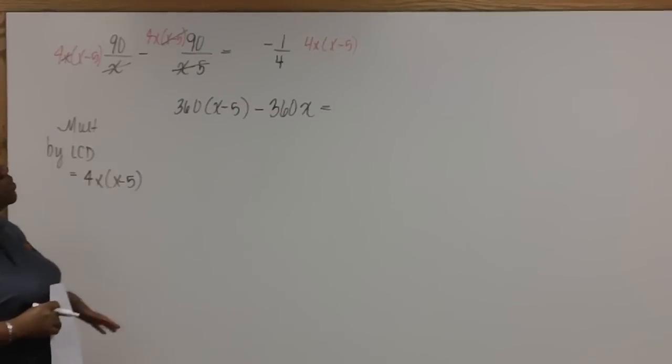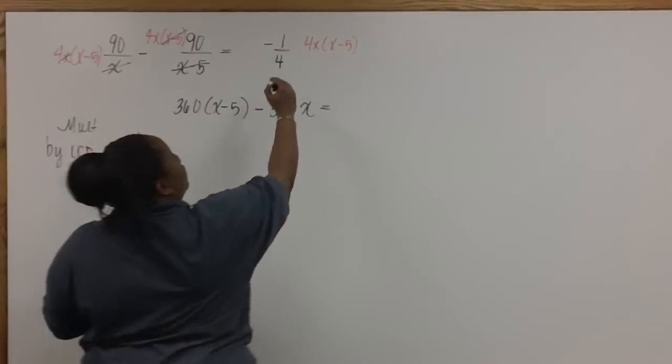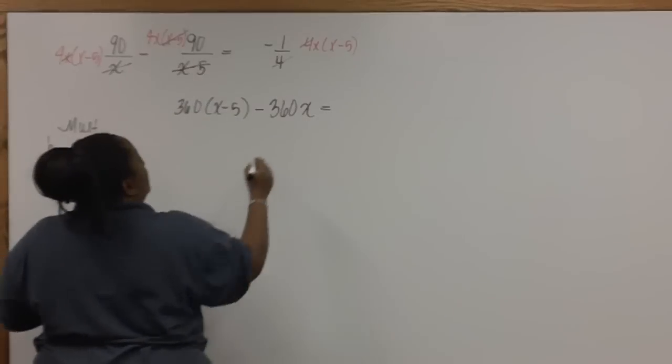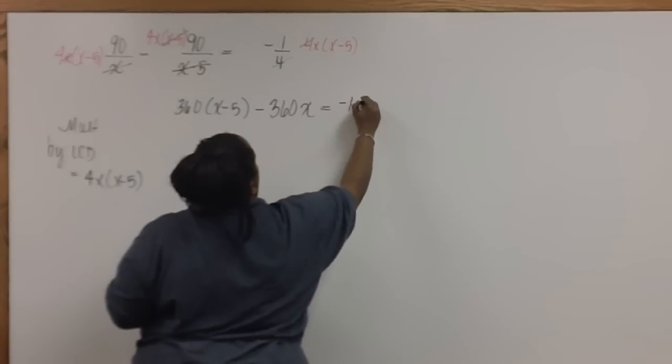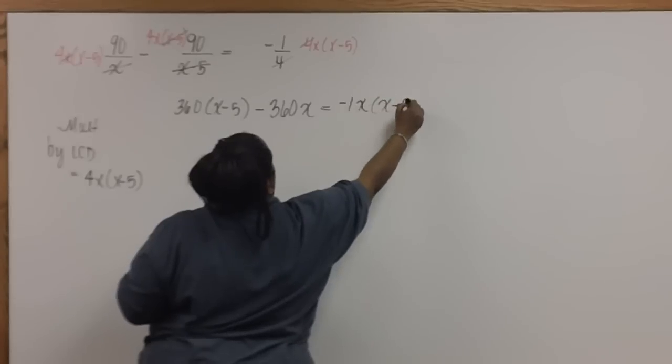And on the other side of the equal sign, the 4's cancel, leaving us with negative 1X times X minus 5.